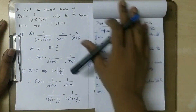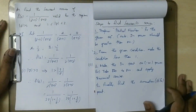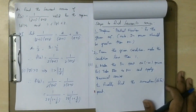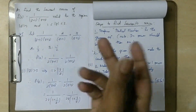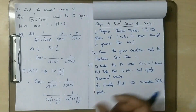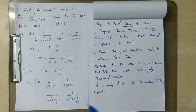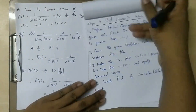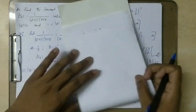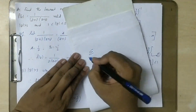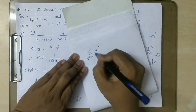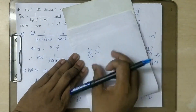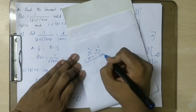Hi all, so in this video we will talk about the Laurent series. In the series, we know it's a summation of some function. So sum of x power n, where x varies from 0 to n, x power n. So this is a series — summation of terms.